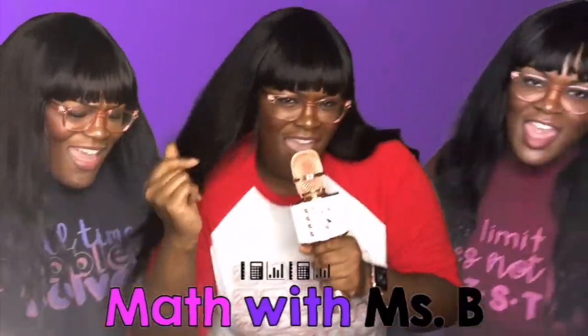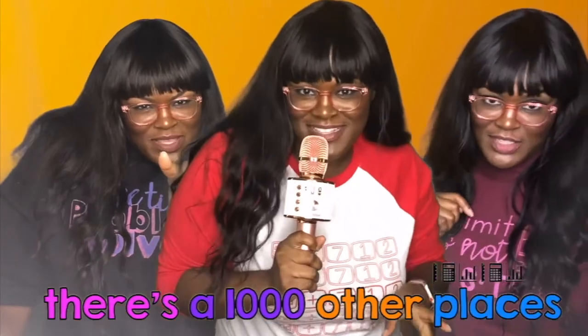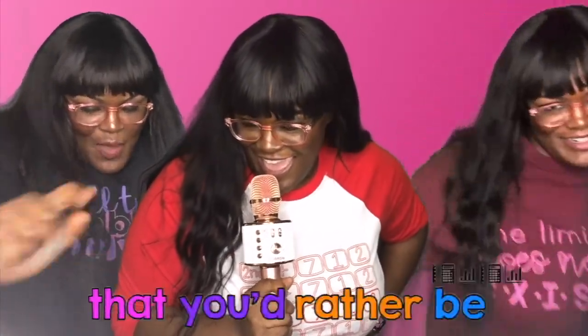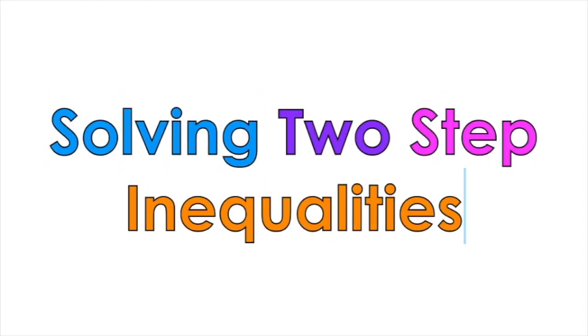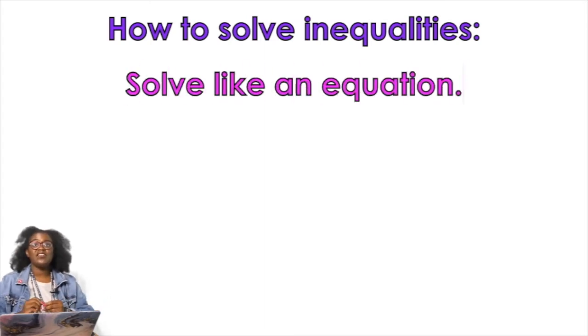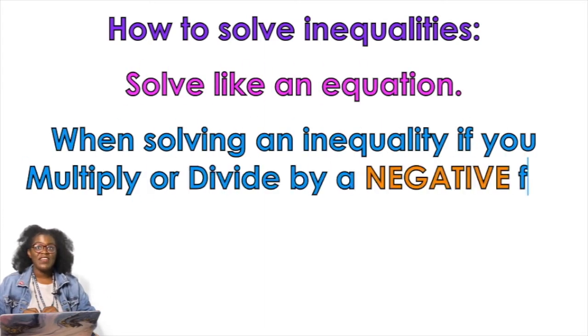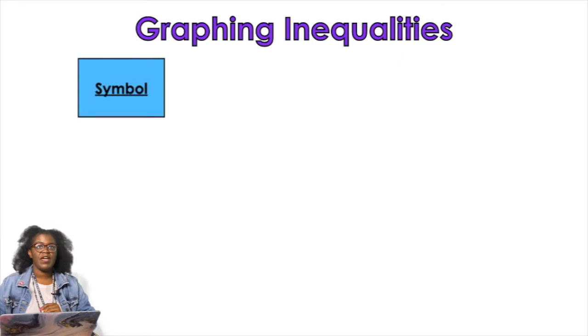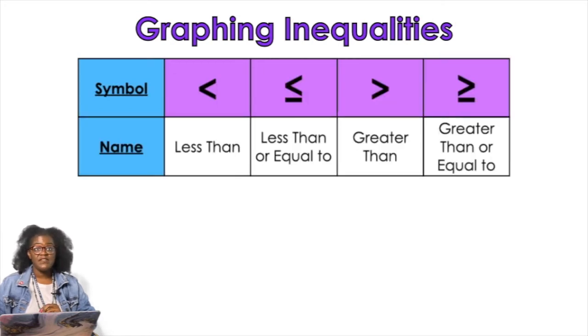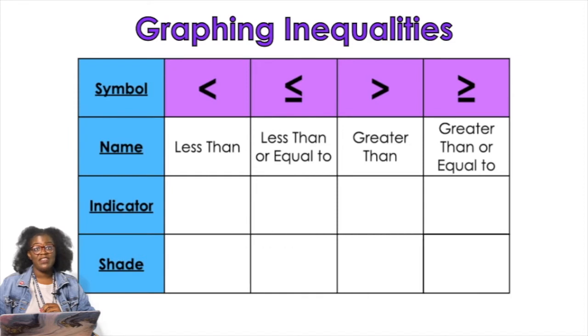We are going to solve two-step inequalities today — you should take notes. Math with Ms. B! To solve an inequality, solve it like an equation. The biggest rule: when solving an inequality, if you multiply or divide by a negative, flip the symbol. We also want to talk about the symbols, their names, and the indicators we use when graphing and shading them.